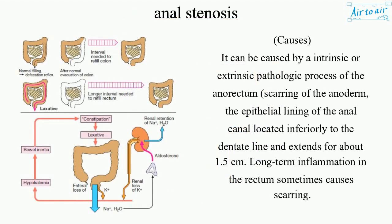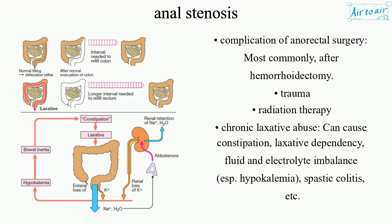Causes: Anal stenosis can be caused by an intrinsic or extrinsic pathologic process of the anorectum, including scarring of the anoderm — the epithelial lining of the anal canal located inferiorly to the dentate line, extending about 1.5 cm. Long-term inflammation in the rectum sometimes causes scarring. It is also a complication of anorectal surgery, most commonly after hemorrhoidectomy.